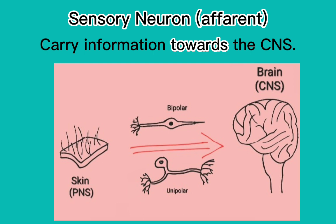Impulses or signals are sent from the senses, skin, muscles, and internal organs. Most sensory neurons are unipolar and some are bipolar.